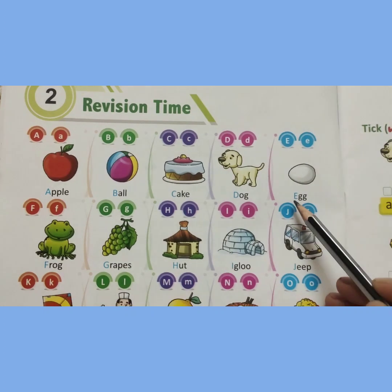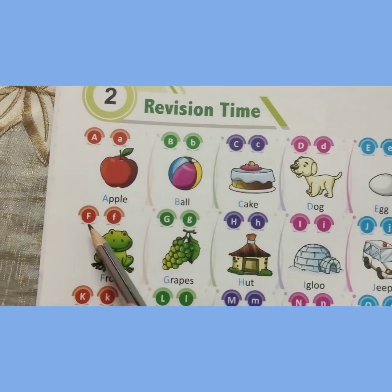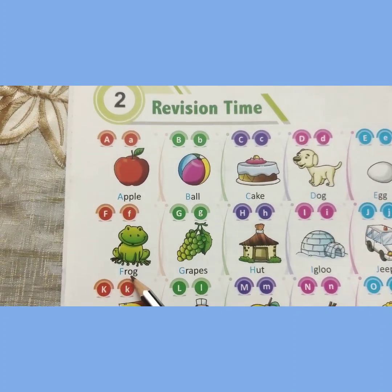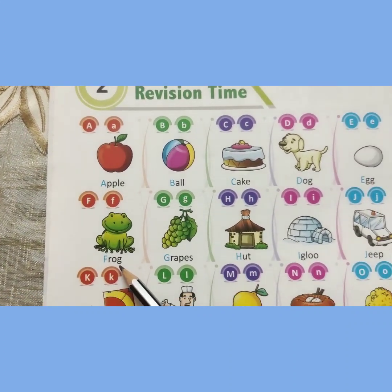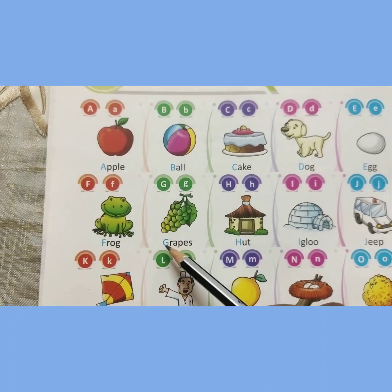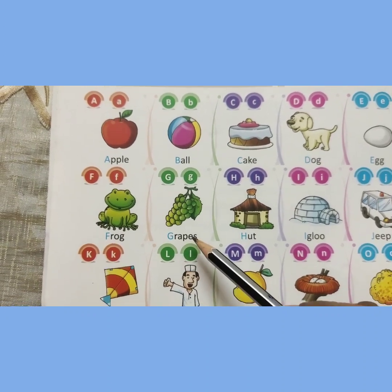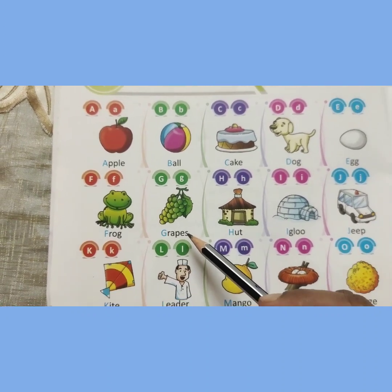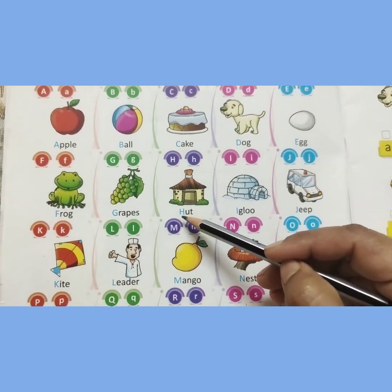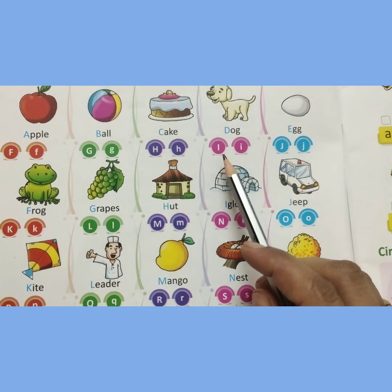E for egg. E, G, G. Egg. F for frog. F, R, O, G. Frog. G for grapes. G, R, A, P, E, S. Grapes. H for hut. H, U, T. Hut.